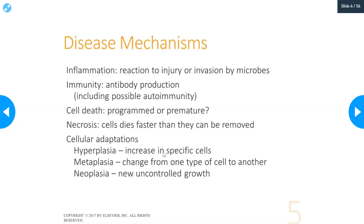There are also cellular adaptations that are evidence of disease. Hyperplasia is an increase in specific cells, so the tissue becomes thicker and contains more of those specific cells — it's an increase in cell number. Metaplasia is a change from one cell type to another; for example, smoking in the lungs can cause pseudostratified epithelial cells to turn into squamous epithelial cells and change their function. Neoplasia is new, uncontrolled growth — meaning neoplasms, cancers, and tumors.